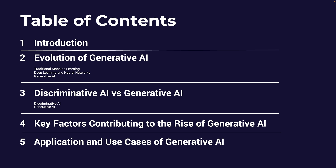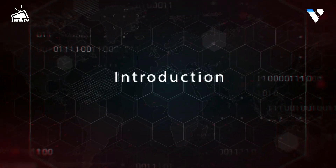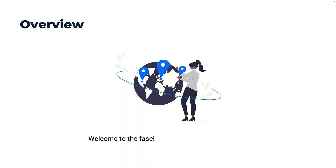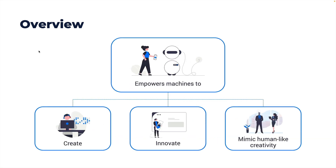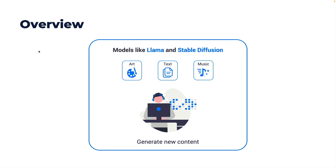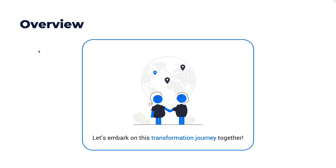Welcome to the fascinating world of Generative AI. This concise series delves into the mechanisms that empower machines to create, innovate, and even mimic human-like creativity. From the foundational principles of neural networks to the intricacies of models such as Llama and Stable Diffusion, this course will equip you with the knowledge and tools to integrate Generative intelligence into your applications. Let's embark on this transformative journey together.